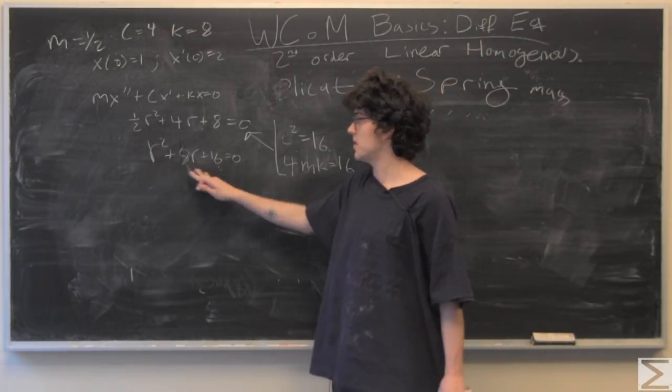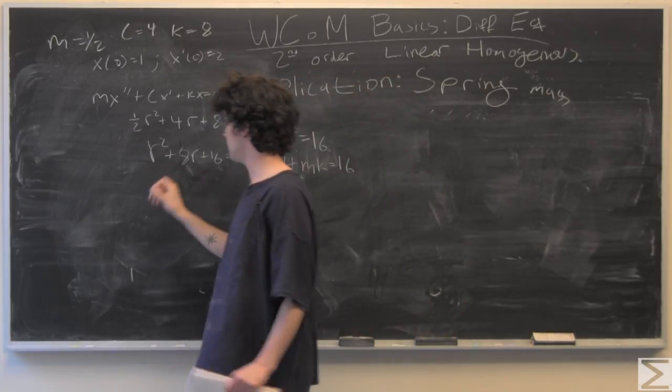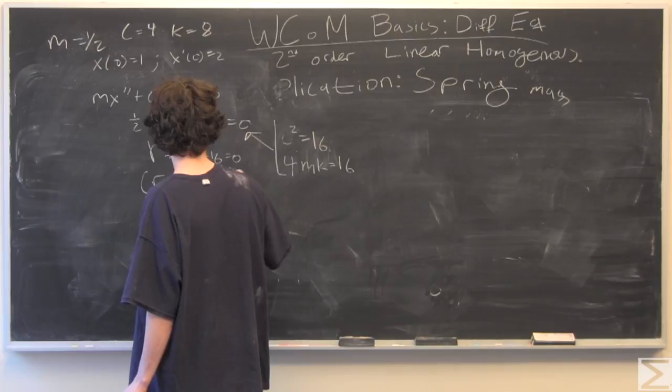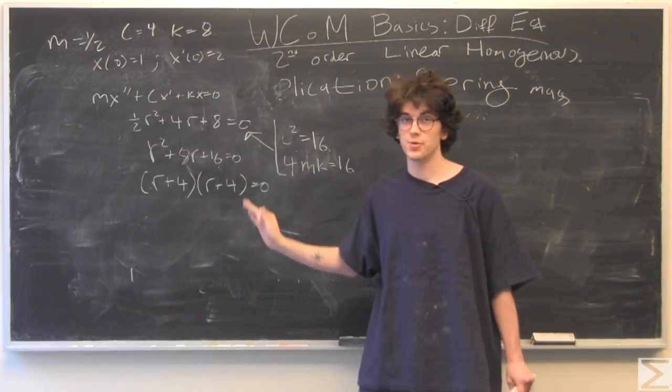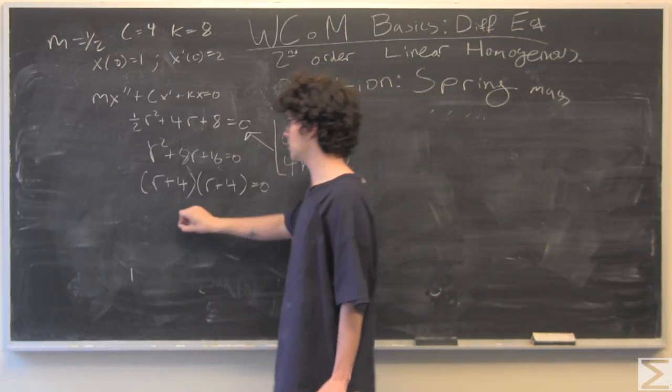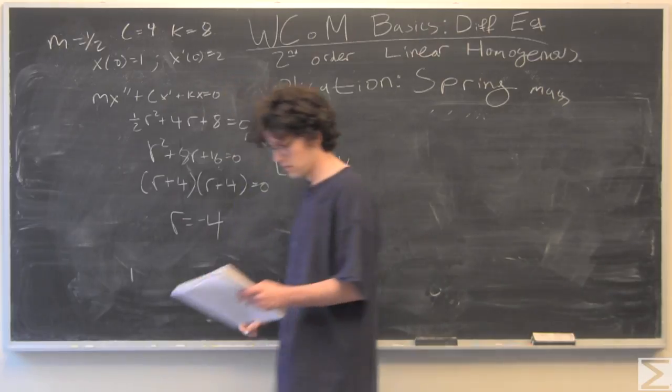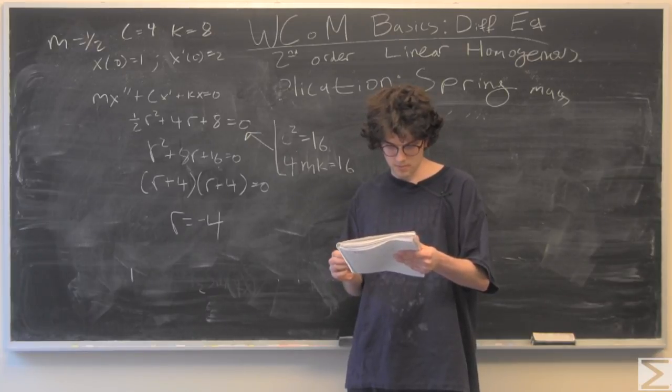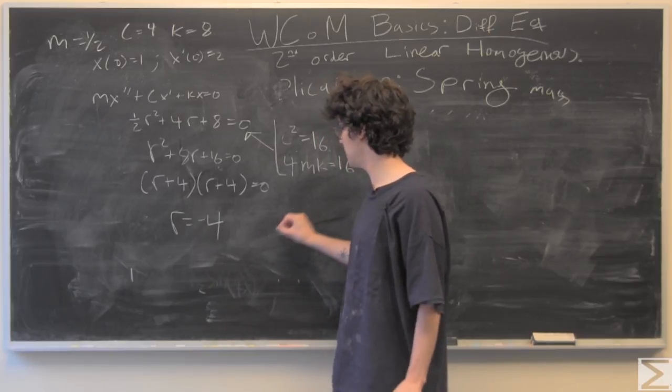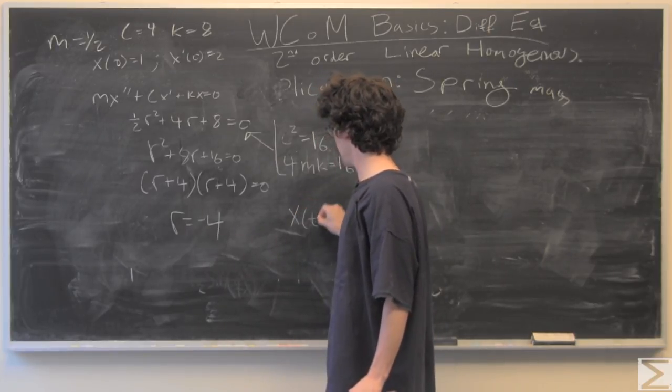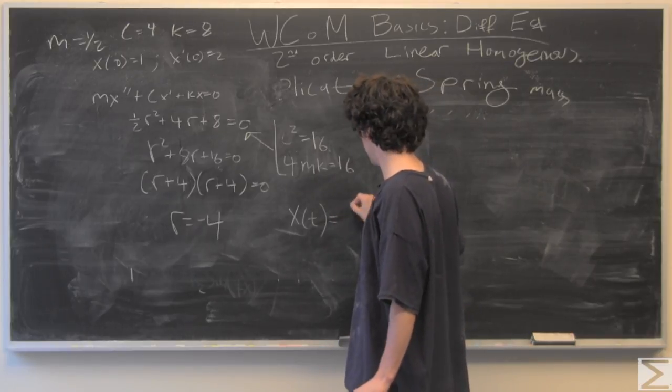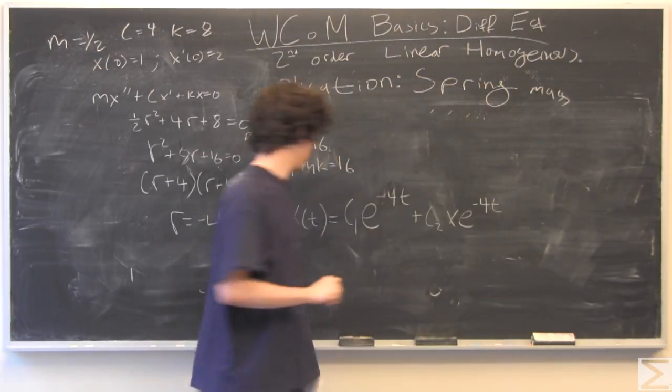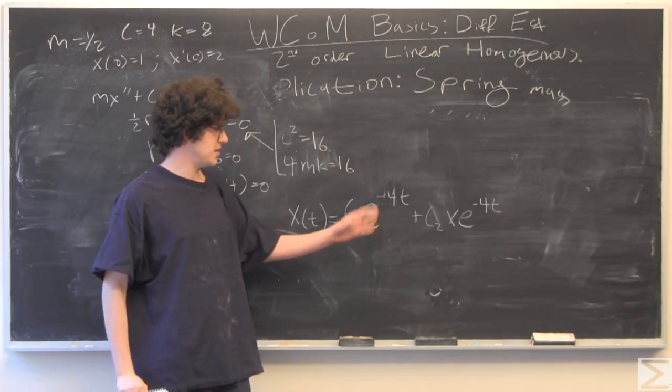And if we multiply by 2 throughout, we notice that this will factor into a perfect square, and our root is negative 4.